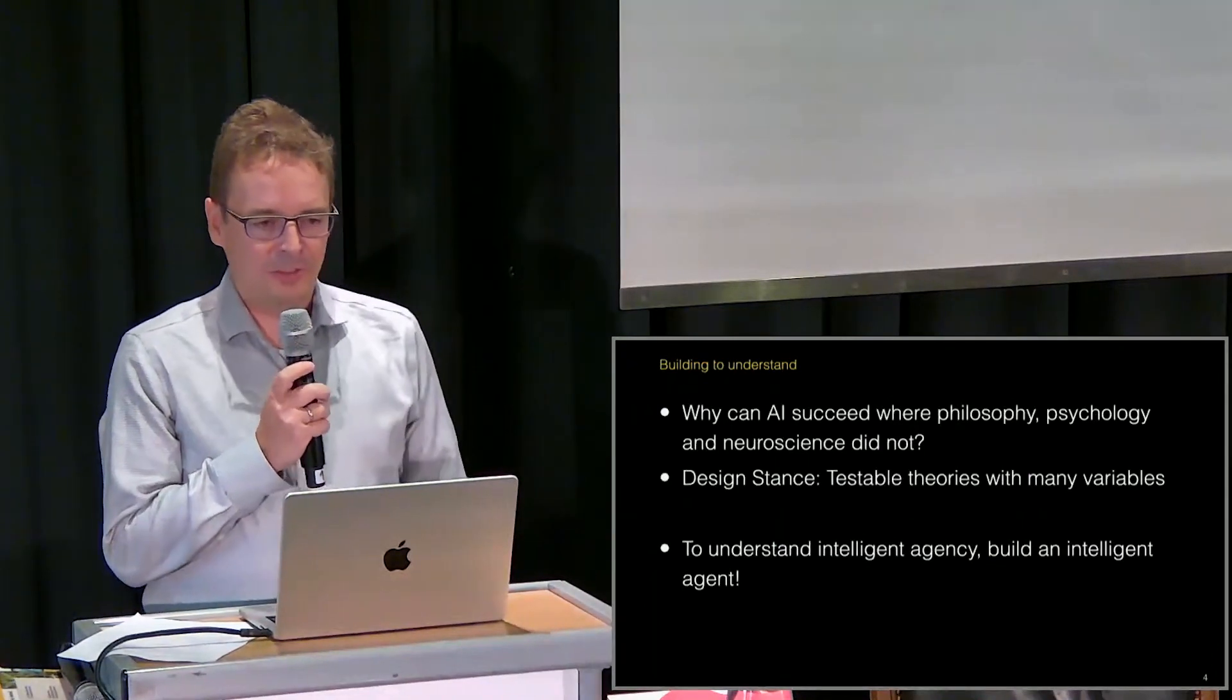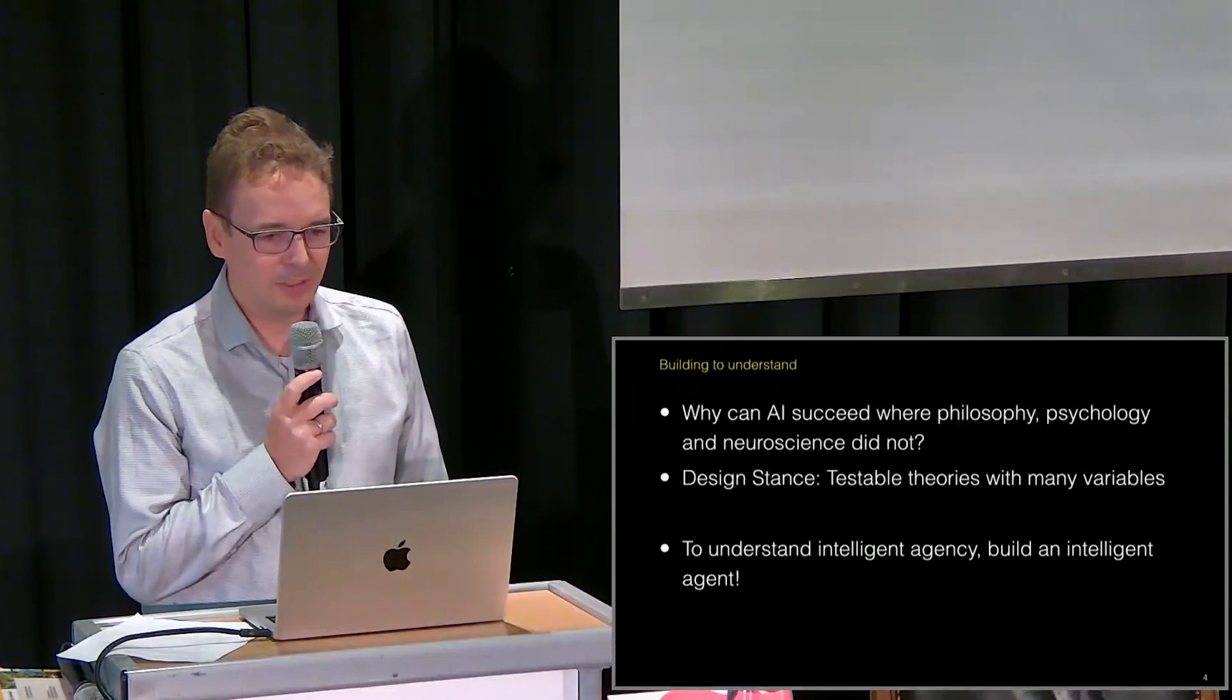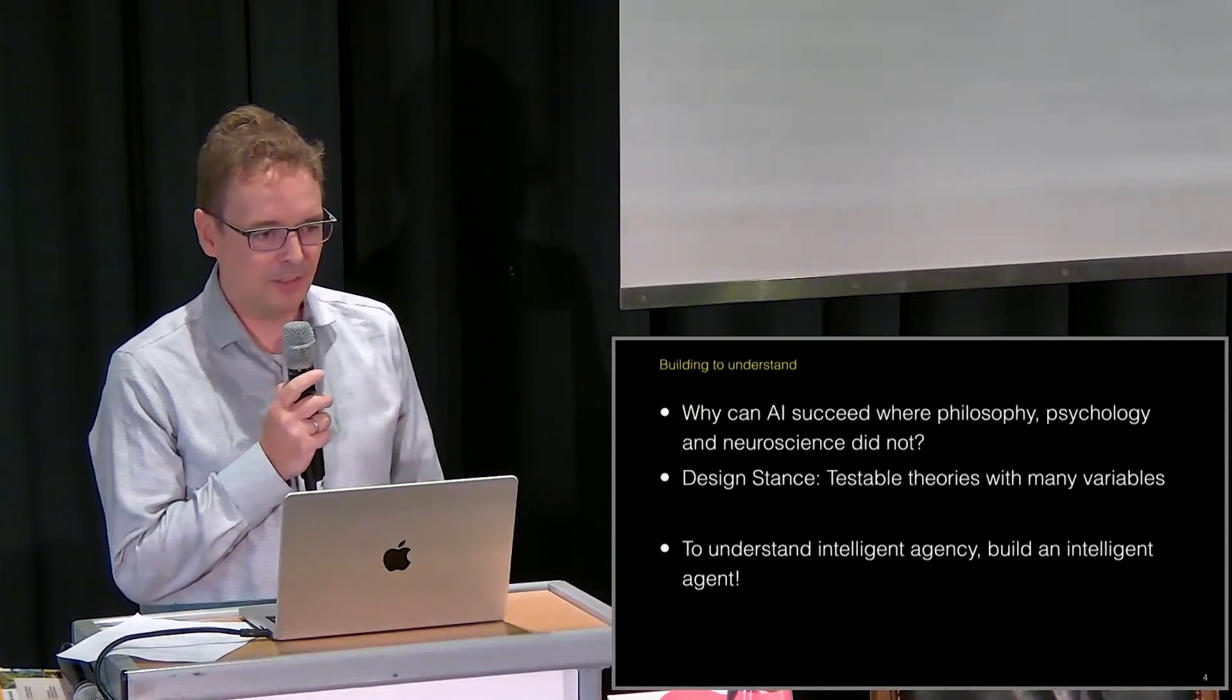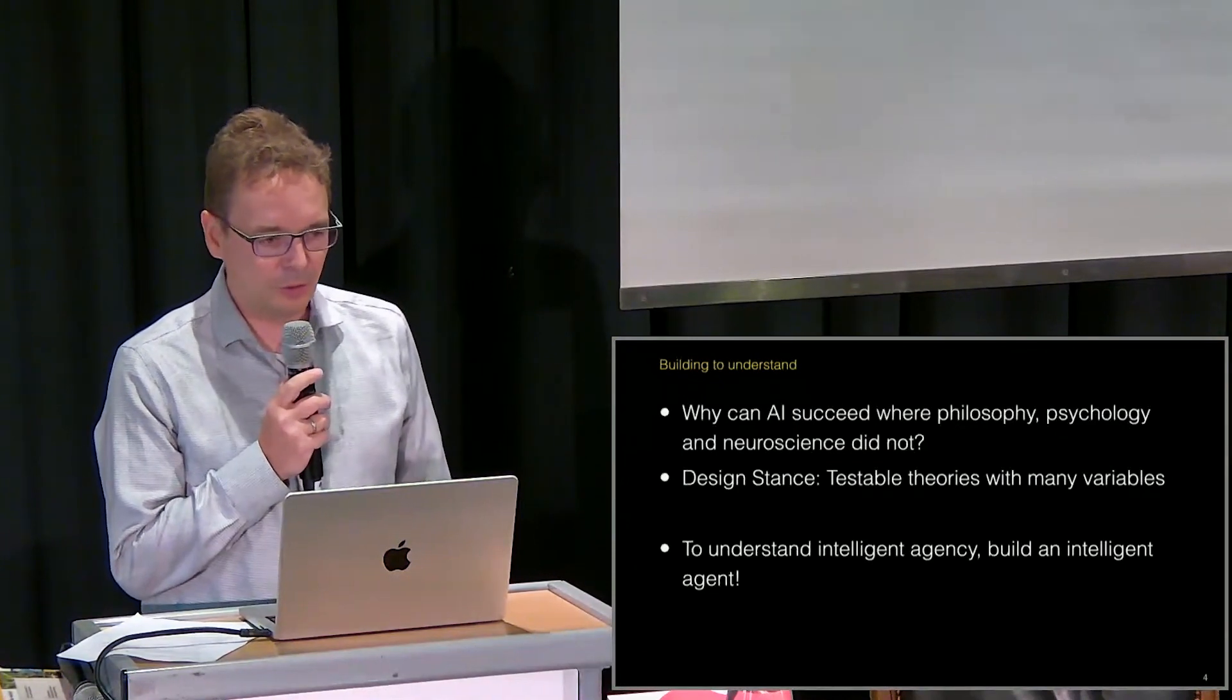Why is it that AI can succeed where academic philosophy and psychology and neuroscience did not? We have sometimes dismissed that AI is very much inspired by results from neuroscience, but if you look closely, it's not true.